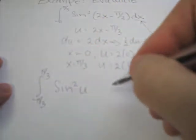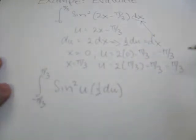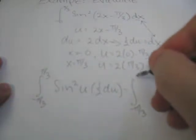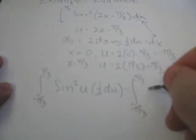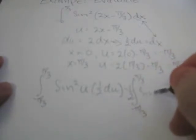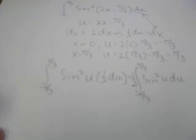Of sin squared u by a half du, which of course becomes the integral from negative π/3 to π/3. Let's bring the half out of sin squared u du. So we have our integral in terms of just the sin squared.